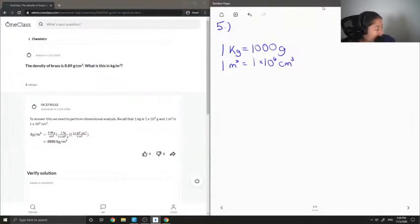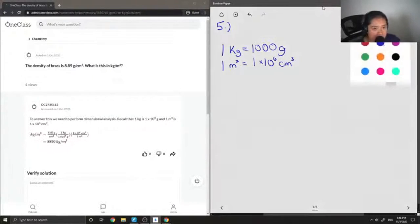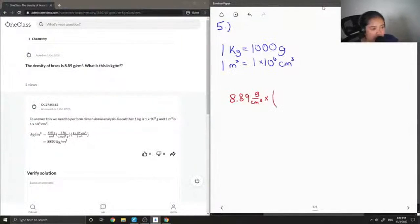So let's say we started off with 8.89 grams per centimeter cubed. I would first have to multiply it to get rid of the grams.